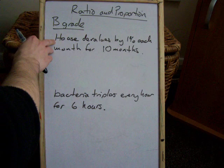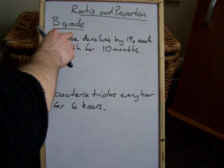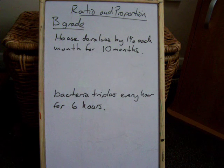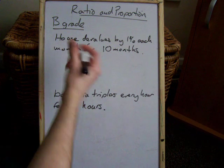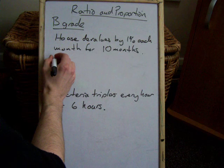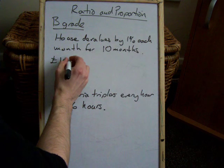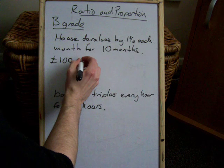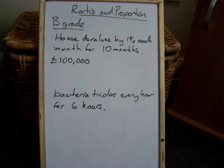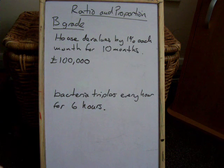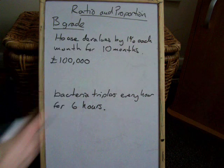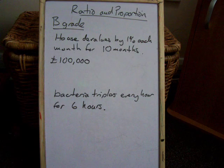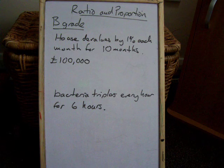A good example relevant for today: a house devalues by 1% each month for 10 months. So for example, if your house value was £100,000 ten months ago and it's devalued by 1% each month, what's it going to be? Every month it's going down by a percentage, and then the next month it goes down by a percentage of what the previous month was.